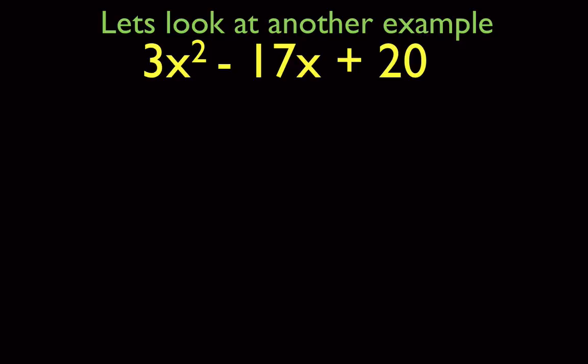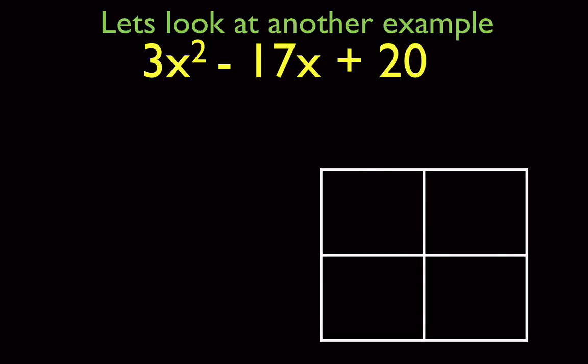The next example we're going to look at is 3x squared minus 17x plus 20. You're going to want to go ahead and copy that down into your notes into the first blank space. We're going to be working our diamond problem and our rectangle, so go ahead and try to do as much of the problem as you can. If you run into trouble, you can let the video continue to play or you can pause it and go back to where you need help.